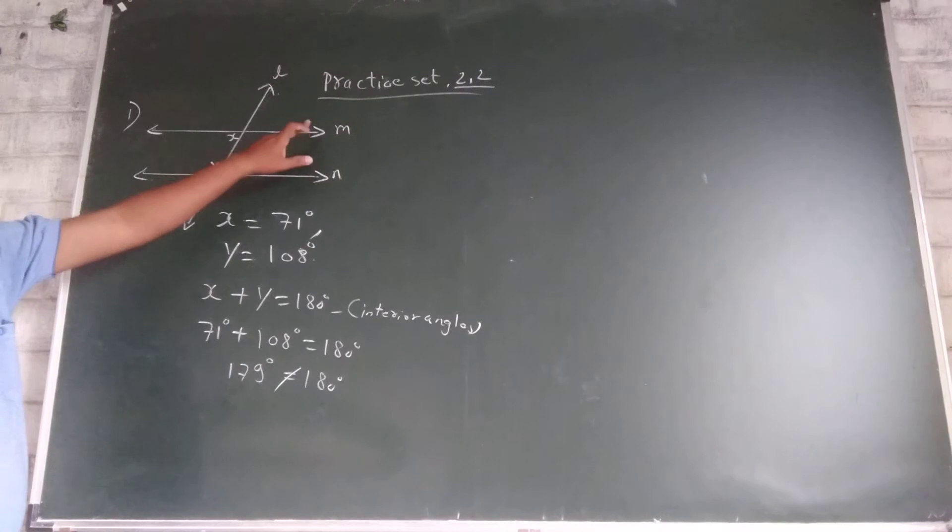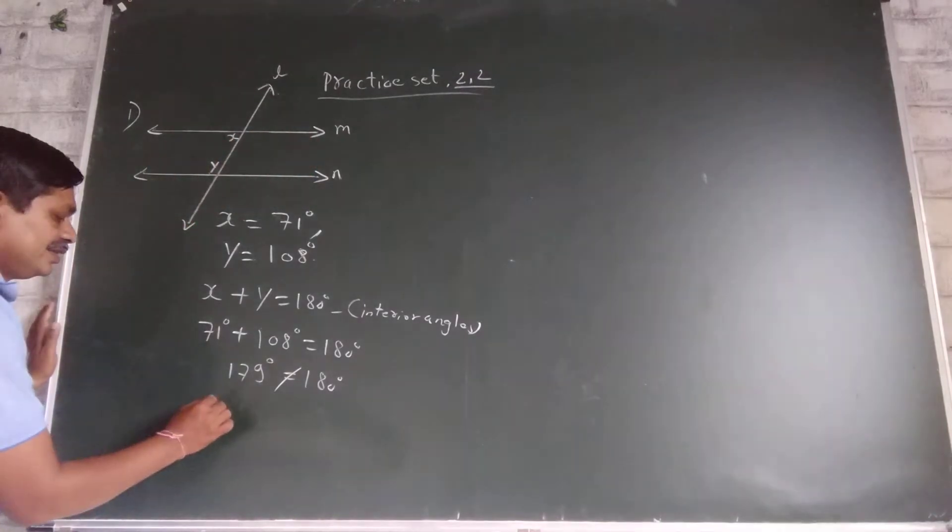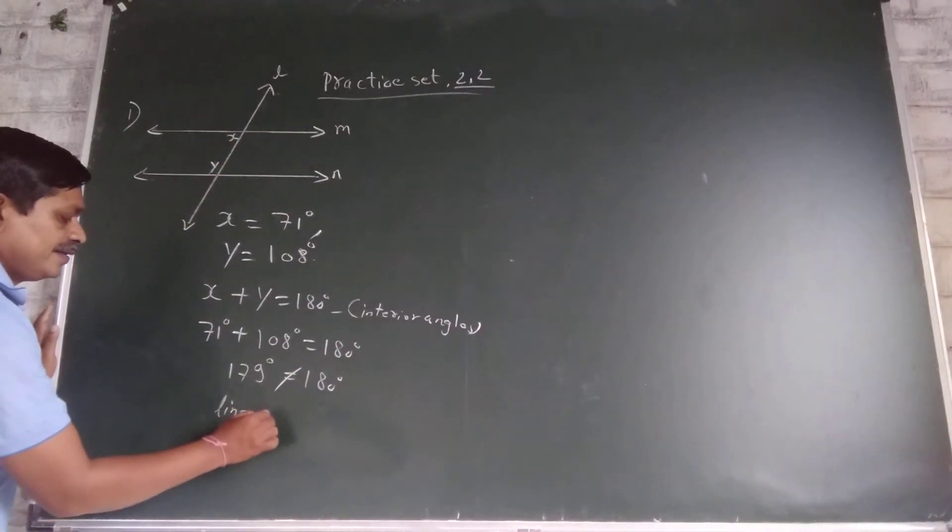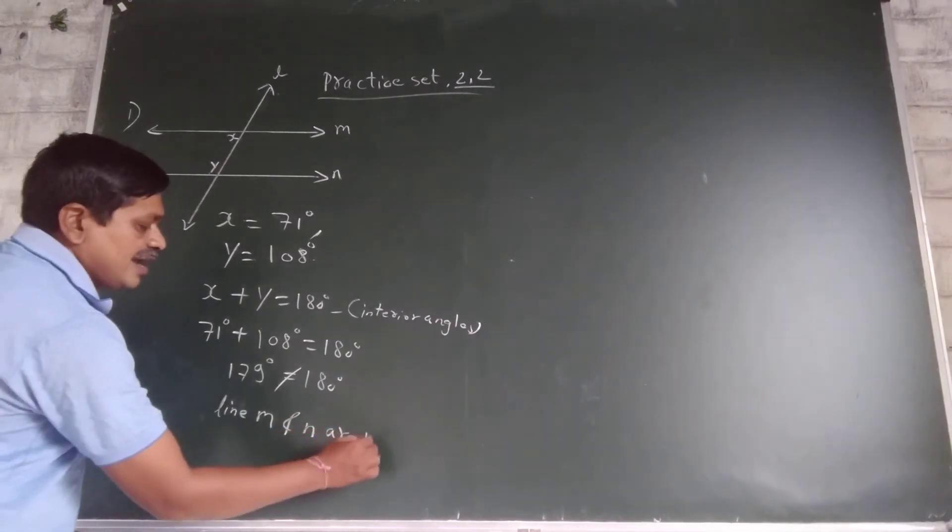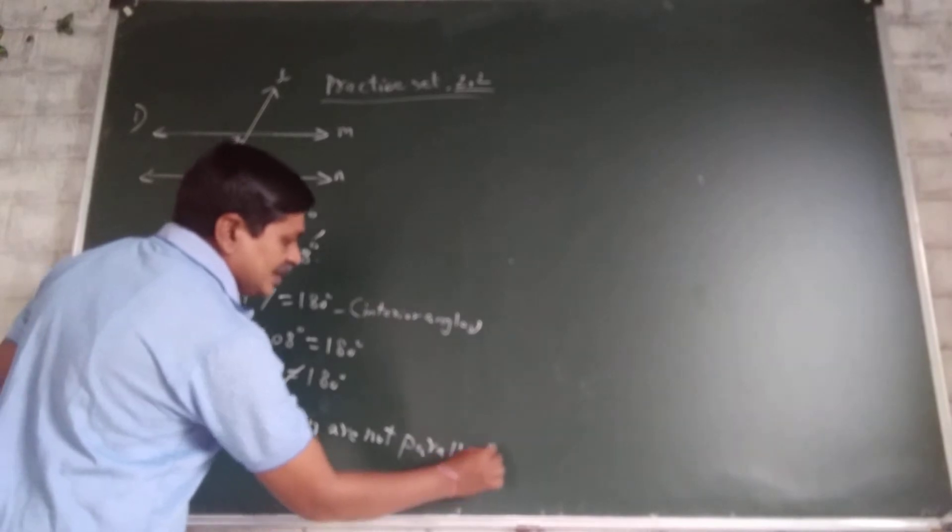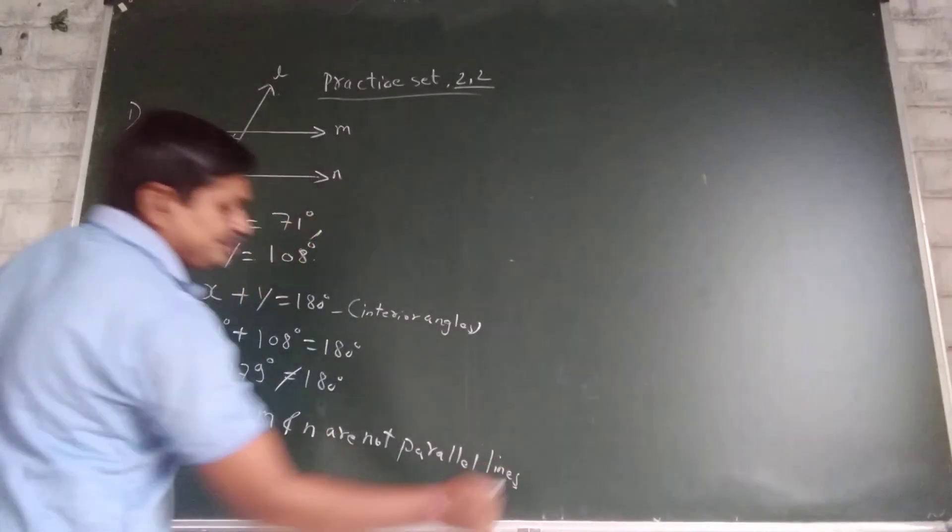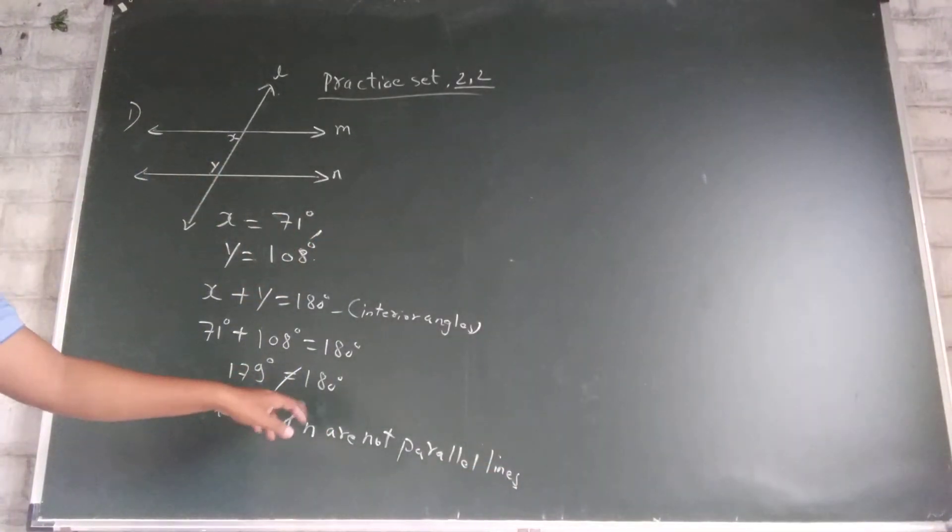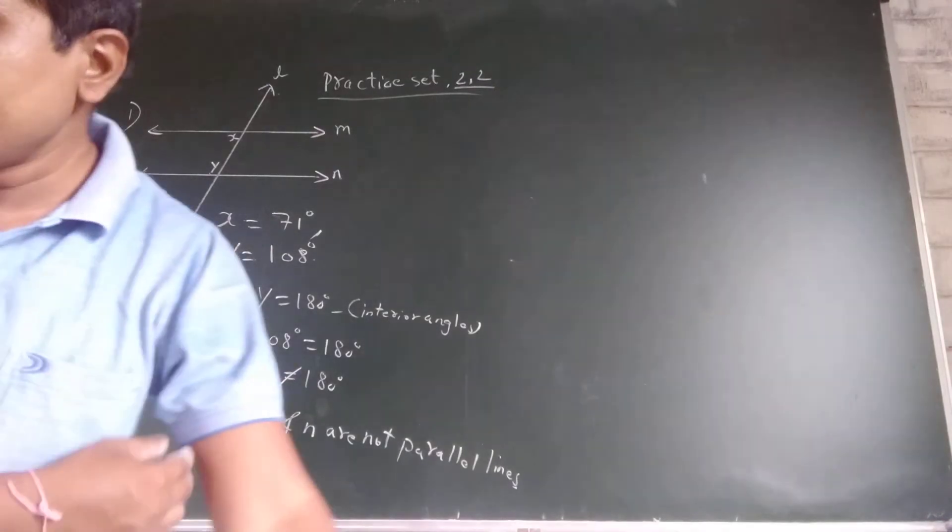Therefore line M and N are not parallel lines because their measurement not came 180 degrees.